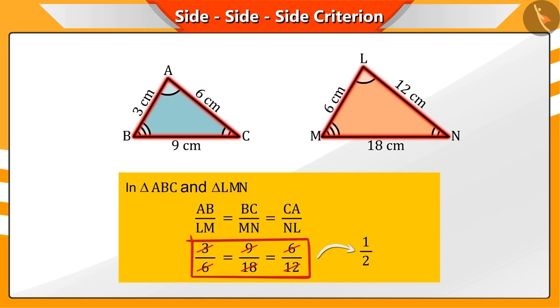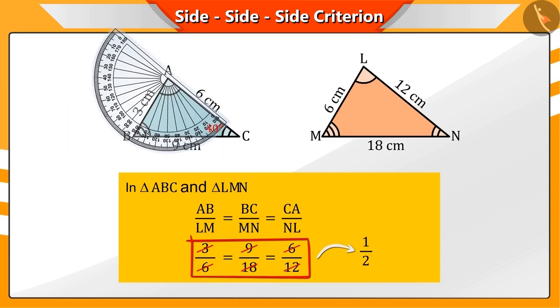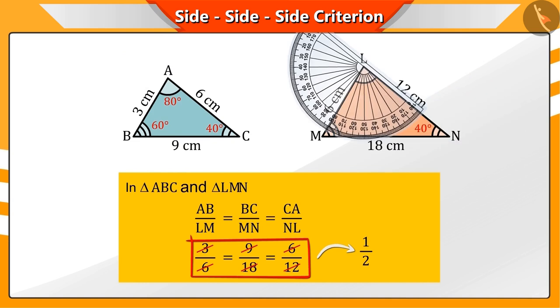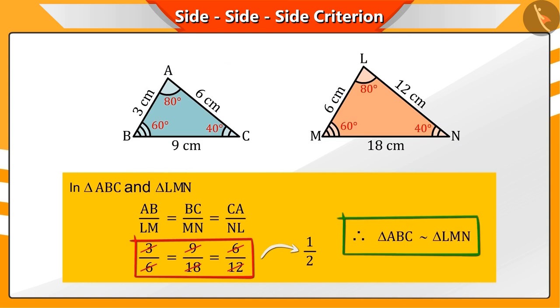Now, what can you say about the angles of these two triangles? Yes, if you measure, then you will see that the corresponding angles are equal. By this, we can see that triangles ABC and LMN are similar to each other.